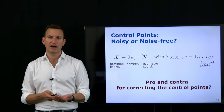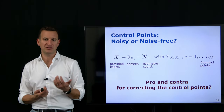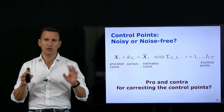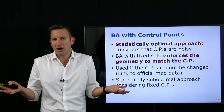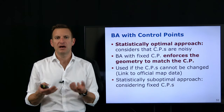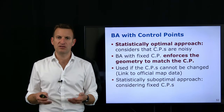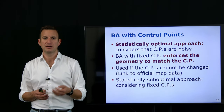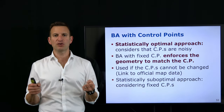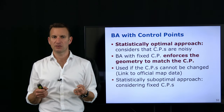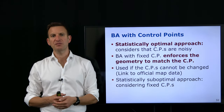We can answer this under different objective functions. If we want the statistically optimal solution taking all points including control points into account, we should consider control points as noisy — because they are noisy in reality — and take the noise information into account. Alternatively, fixing control points enforces a geometry onto the bundle adjustment solution: certain points will not be moved, staying at the location fixed by the control points. This can be useful, for example, if you want to align your model with official map data that you cannot correct.